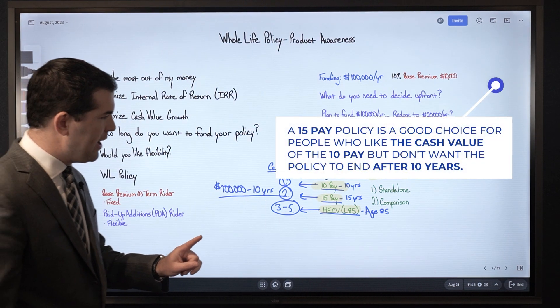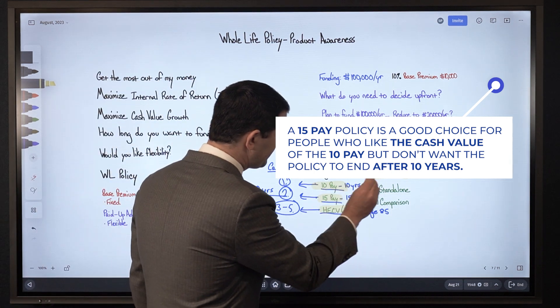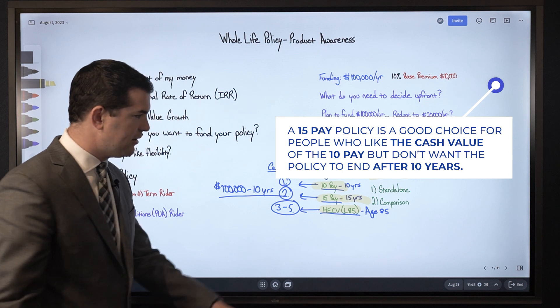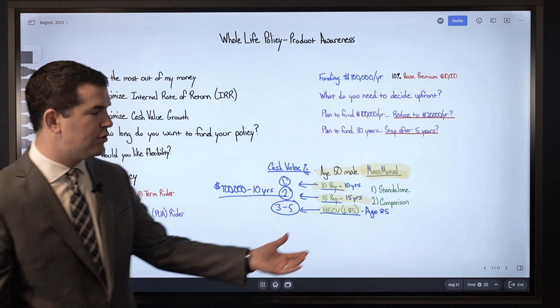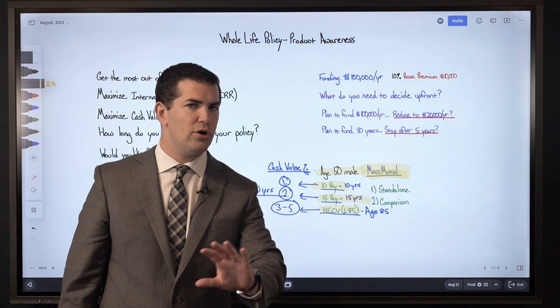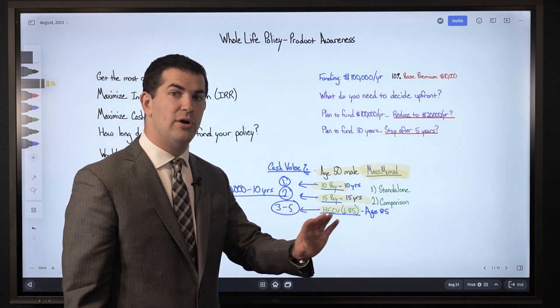So my follow-up question would be, okay, if you're 50 now, a 15 pay is the next best thing to a 10 pay. 15 years, you'll be 65. Do you think that you'll want to fund it longer than 15 years or beyond age 65?